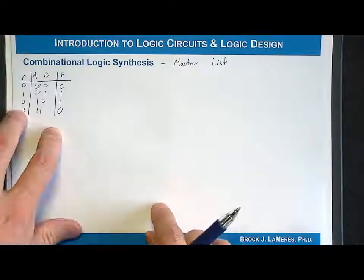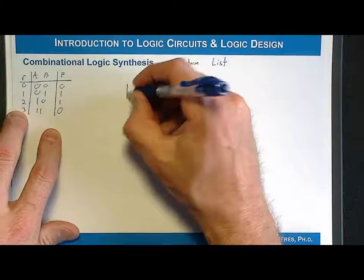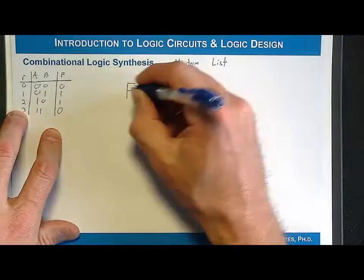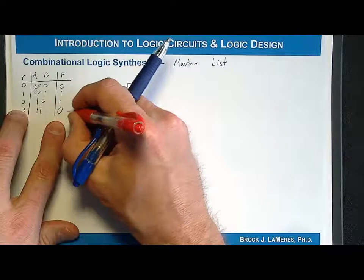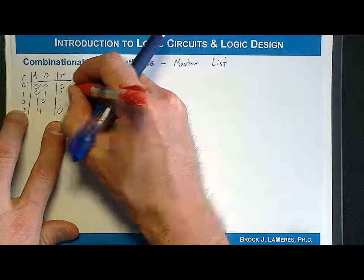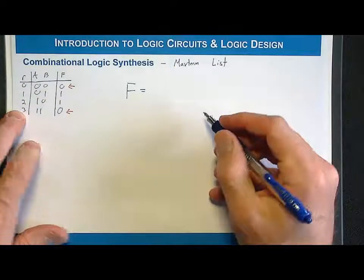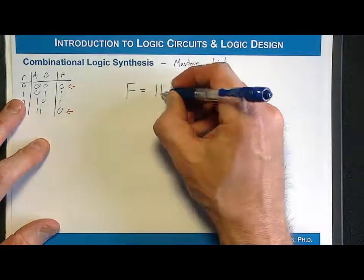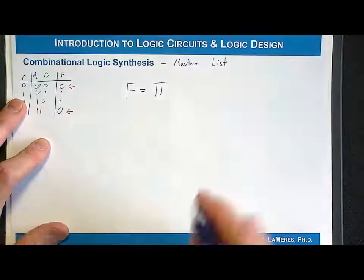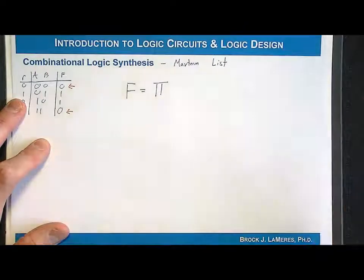So what we're going to do here is we're going to write an expression that says F is equal to, and we're going to list all the row numbers that correspond to an output of a 0. So in this situation, we need to indicate that we have a max term list. So what we do is we use the capital letter PI, and then that signifies that this is a max term list.